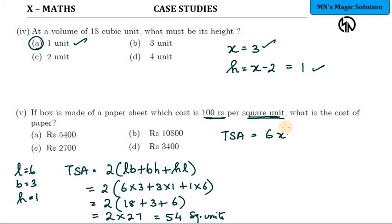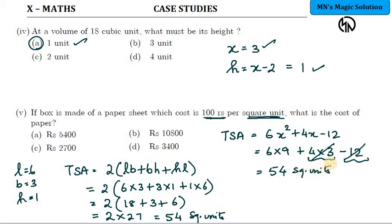We found this expression in the second problem: 6x squared plus 4x minus 12. We identified x value as 3. Substitute: 6 into 3 squared is 9 plus 4 into 3 minus 12. 4 times 3 is 12, minus 12 gets cancelled. You end up with 6 times 9 which is 54 square units. We found TSA as 54 square units. Question says per square unit is 100 rupees. So cost is 54 into 100, which is option A, 5400 rupees.